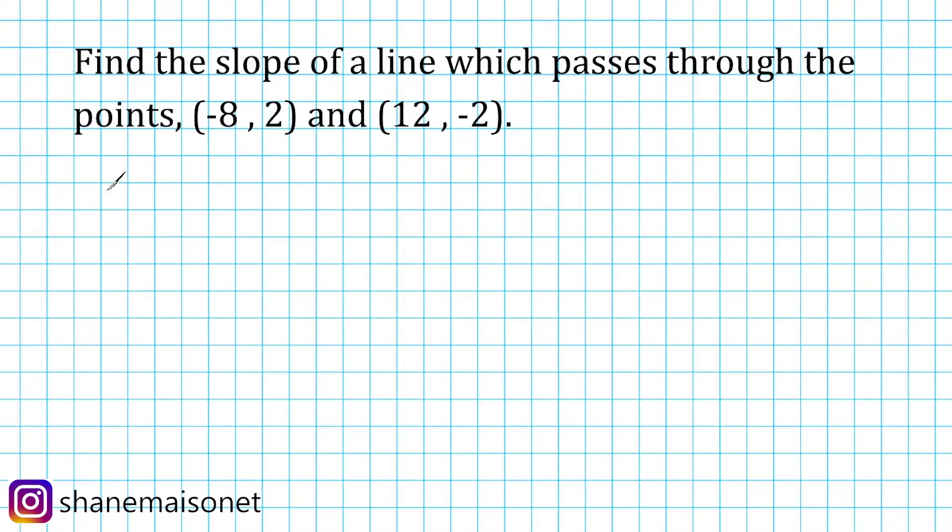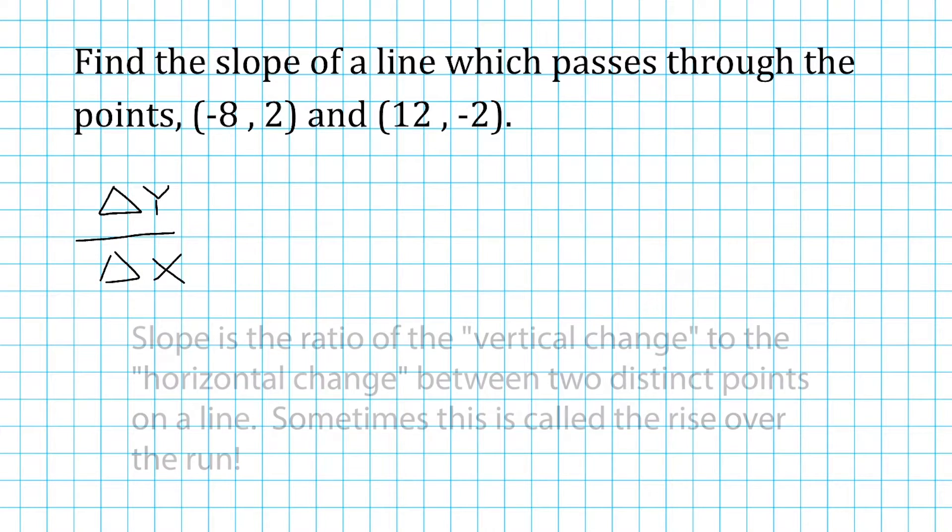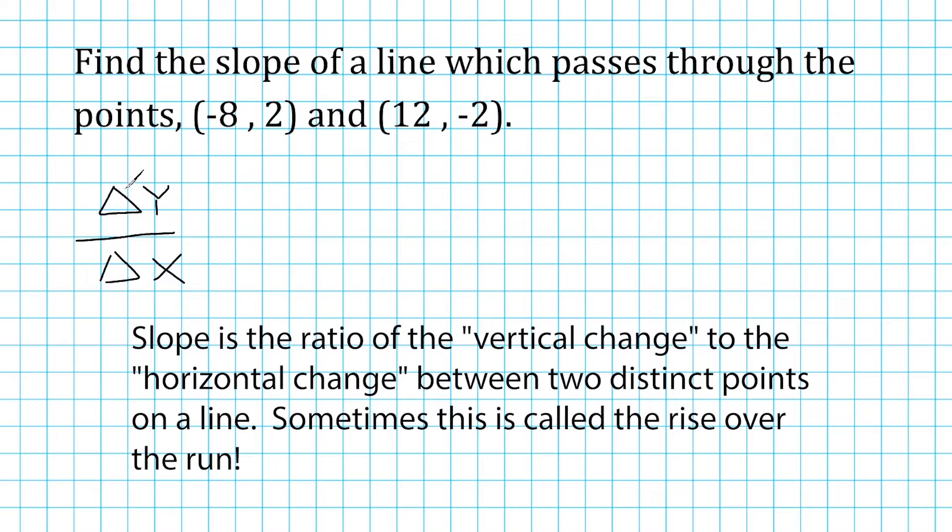So the slope of a line is really defined by the change in y values of that line as compared to the corresponding changes in its x values. This little triangle here is a symbol that's called delta, which represents change in mathematics. So we can read this as the change in y values as compared to the change in x values.